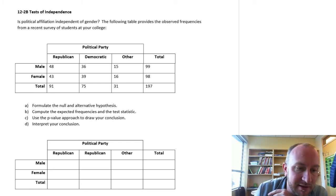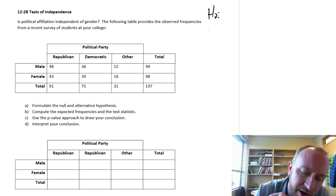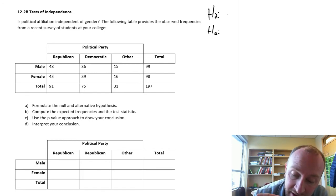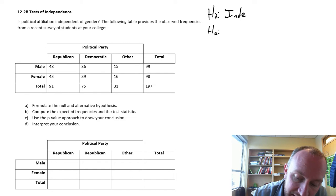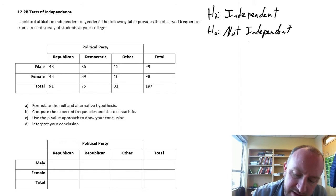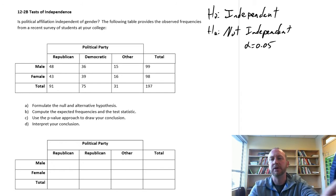Our null hypothesis in this case, as in any problem for a test for independence, is that the two variables, our column and row variable, so political party and gender, are independent of one another. The alternative hypothesis is that they are not independent. Here's our level of significance alpha, 0.05.